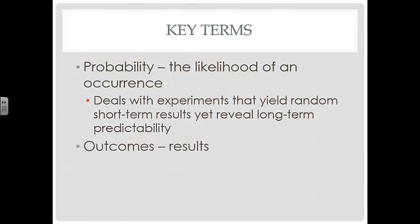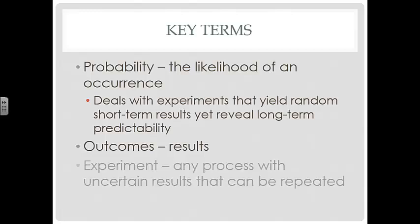Outcomes are really just another word for results, the outcomes, the results that happen when you run the experiment. And an experiment is any process with uncertain results that can be repeated. So we don't know what's going to happen, but we can do the experiment over and over to produce results.